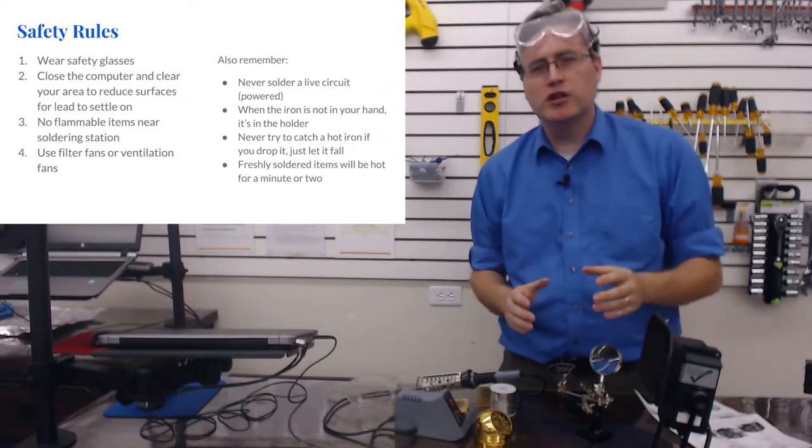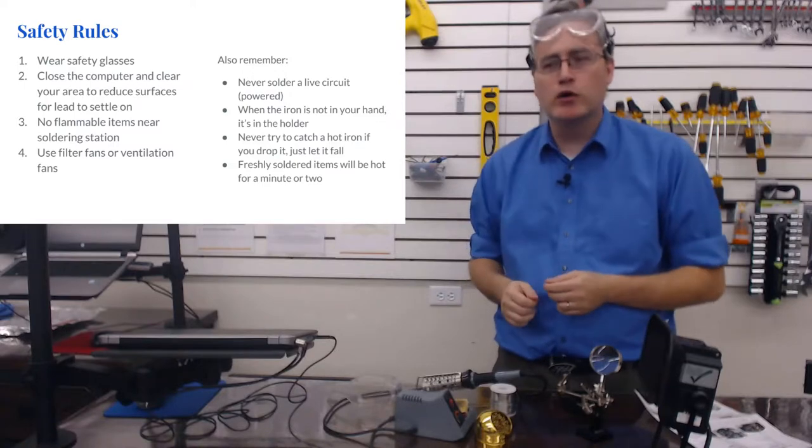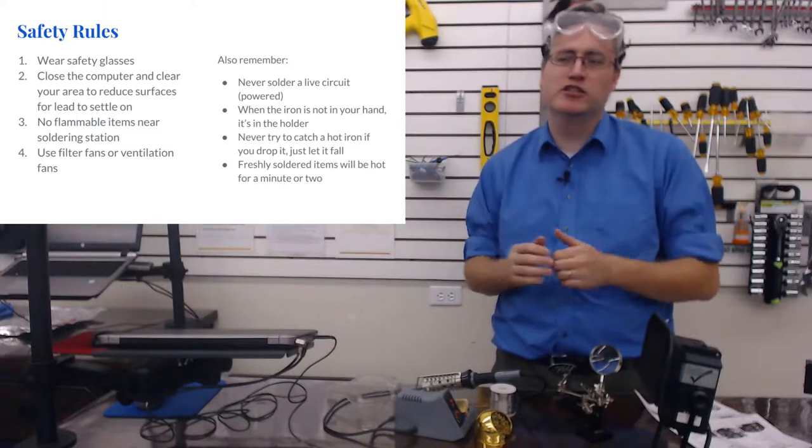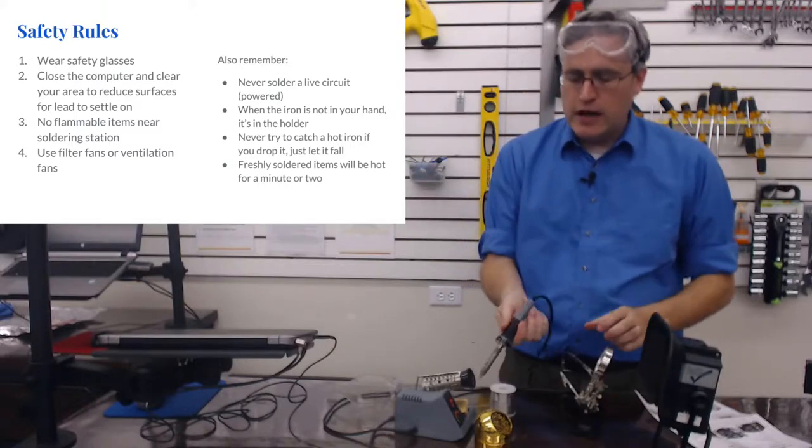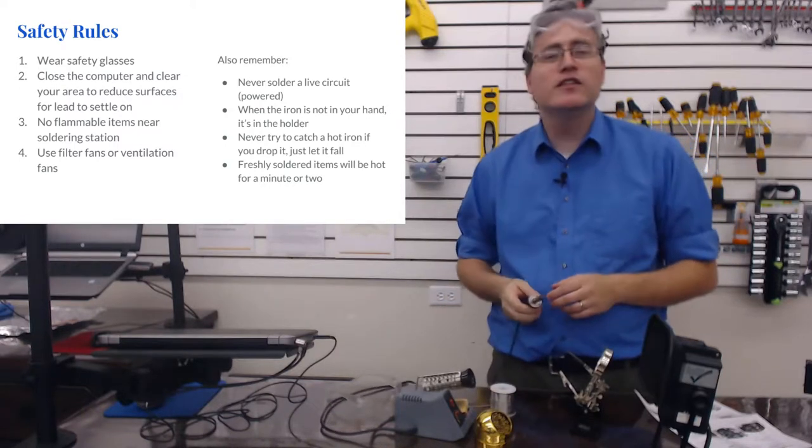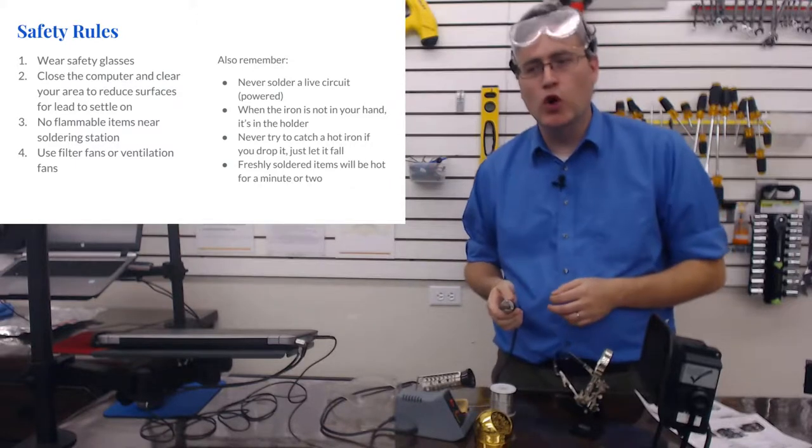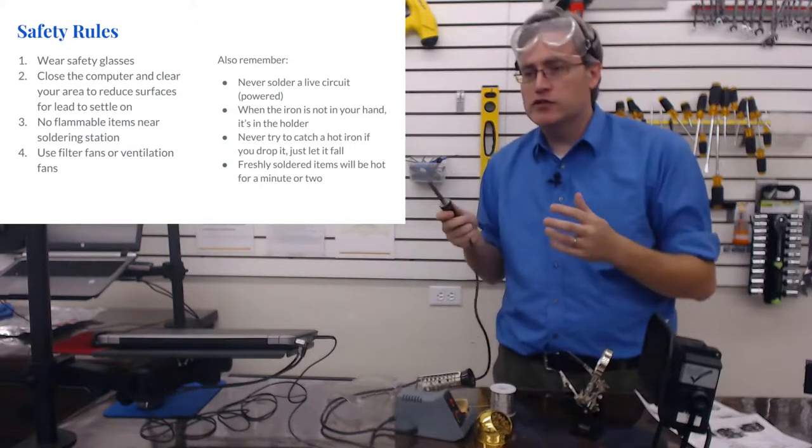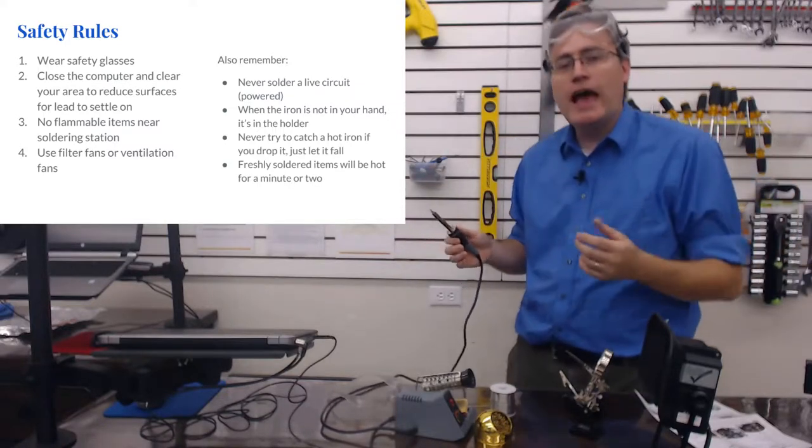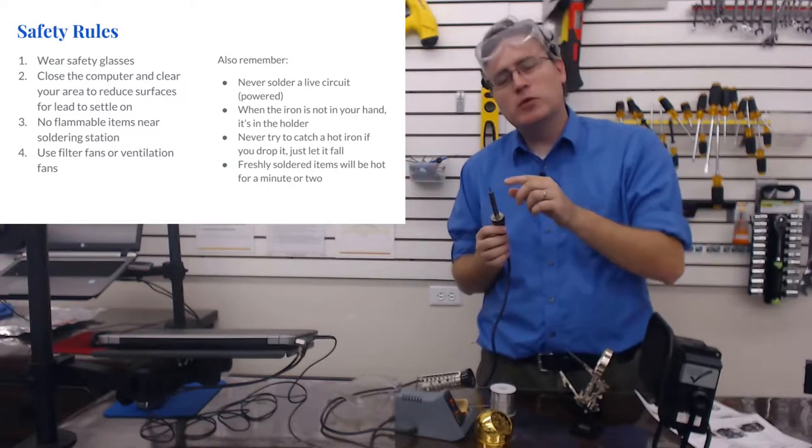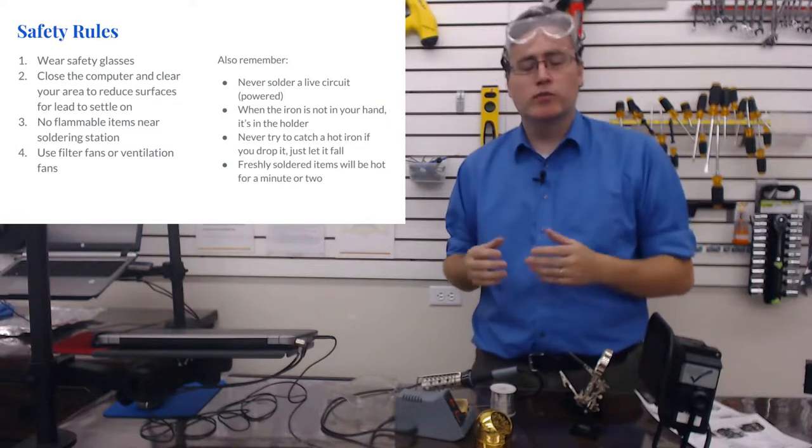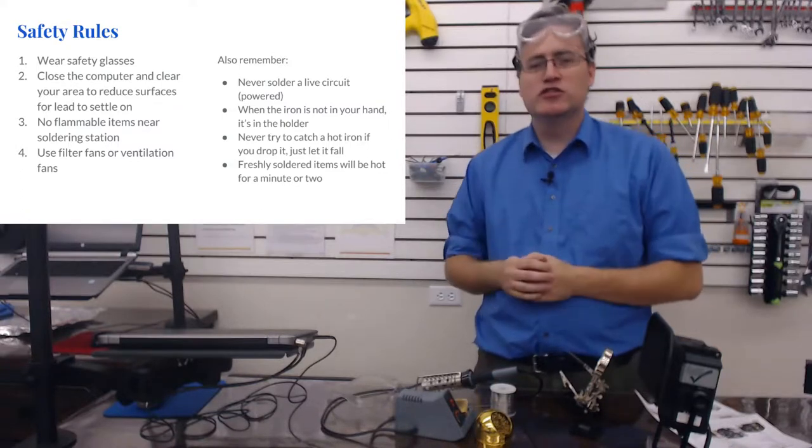Number one, never solder something when it's live. If it's plugged in or powered by a battery, do not start putting your electrical leads to it. That's just a bad idea. Also, when this iron is not in your hand, make sure it's in the holder. You're not just going to set it on the table and wait for it to roll off. And if you do fumble the iron and start to drop it, well, just let it fall and get your body and hands and feet out of the way. It's much easier to fix and replace a broken tip on a soldering iron than to recover from a burn or burnt clothing from it touching your skin and clothing.